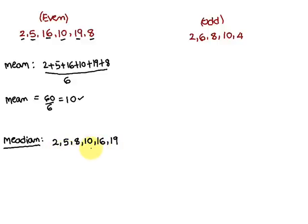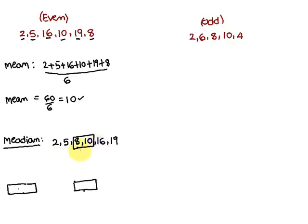Since we have six numbers (an even count), the median lies between the third and fourth values, which are 8 and 10. So the median is (8 + 10) / 2 = 18 / 2 = 9. The median is 9.